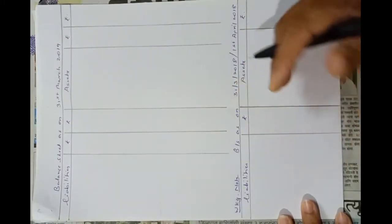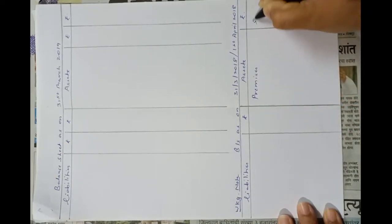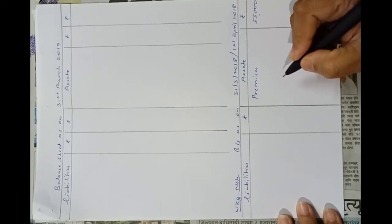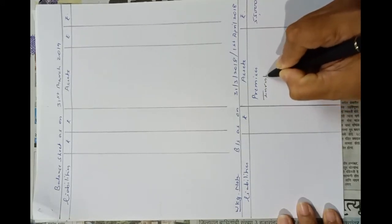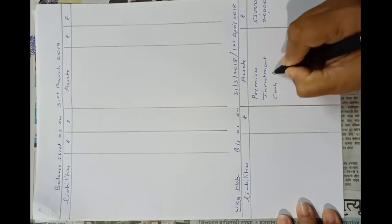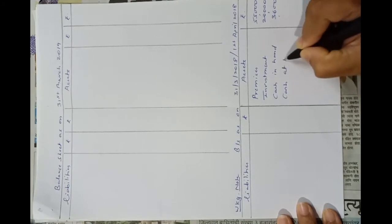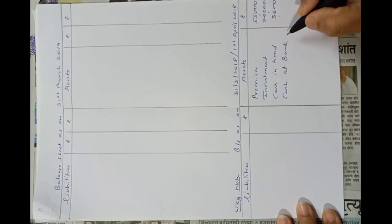For finding capital fund, we have to prepare a balance sheet as on 31st March 2018 — that is the last year's closing balance sheet, which is the current year's opening balance sheet. From the last adjustment: on 31st March 2018, premises Rs.55,000 and investment Rs.20,000. From the receipts and payments account, opening cash balance Rs.3,600 and cash at bank (current account) Rs.7,570.